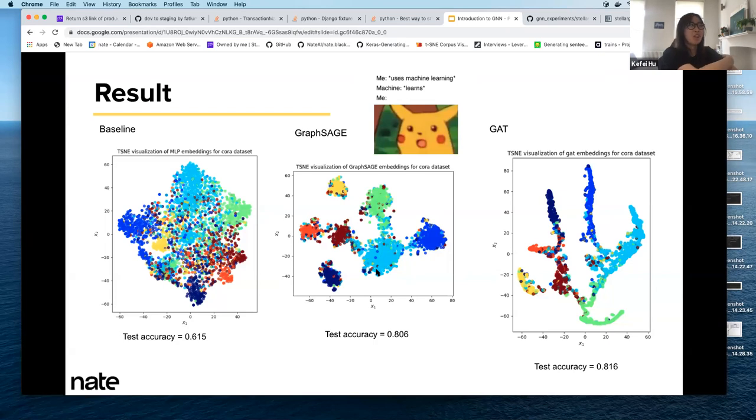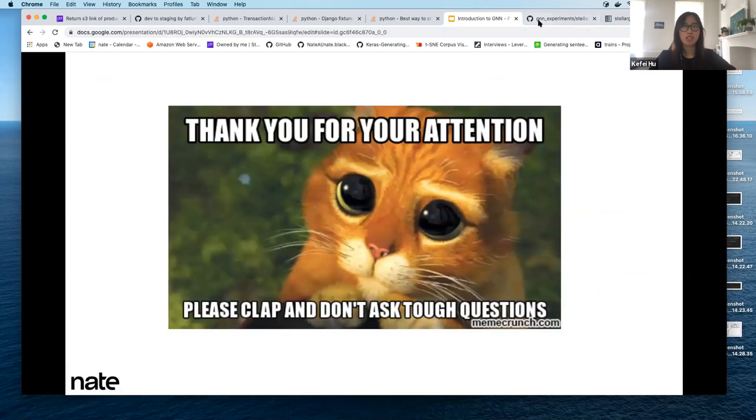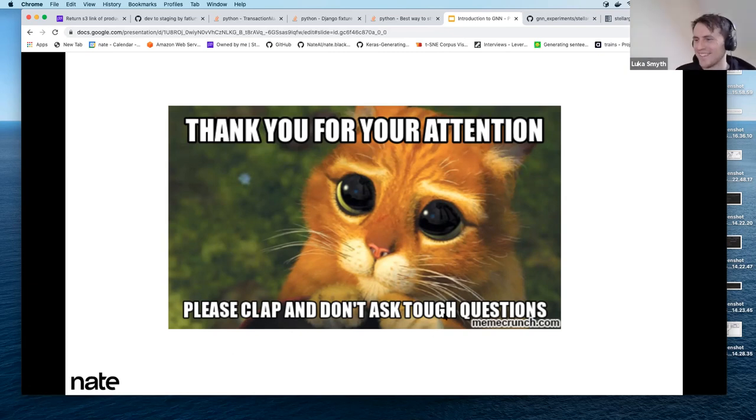I hope this demo would motivate you to consider applying graph neural networks whenever you have graph-structured data. Here is the list of resources that helped me to create this workshop. I've also attached my GitHub repo, so feel free to take a look and experiment yourself. I believe this is the end of my workshop. Thank you very much for listening. If you have any questions, thank you. I hope I haven't rushed a lot of things. Thank you very much.